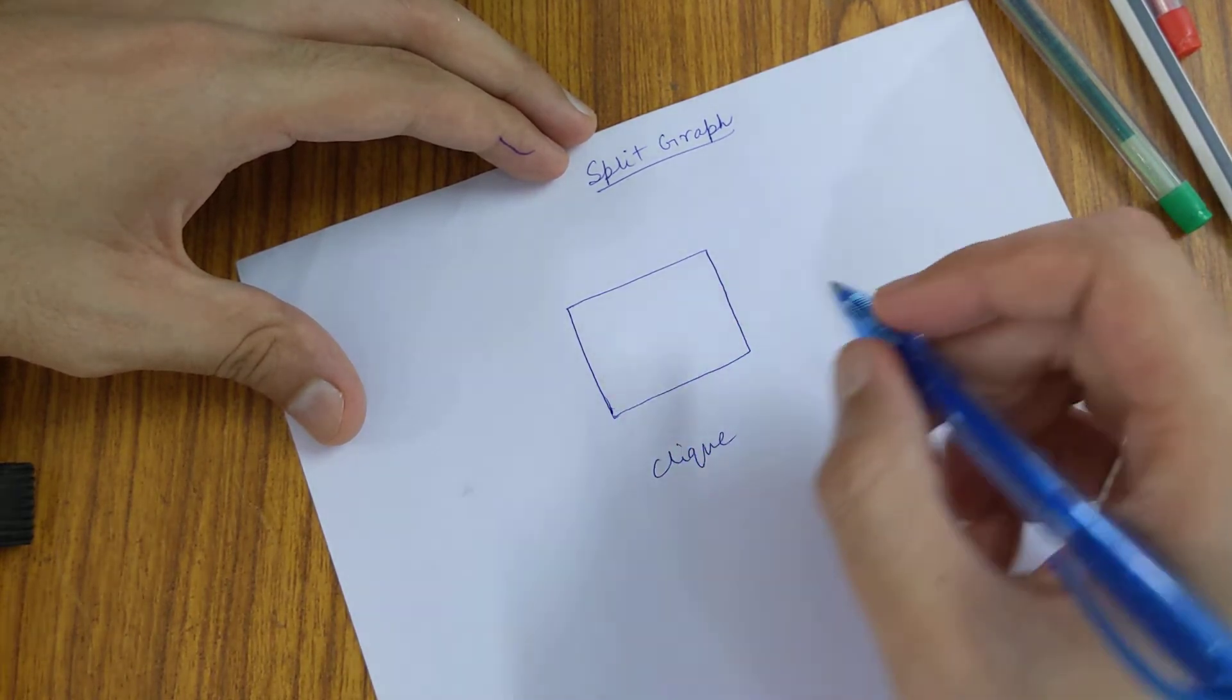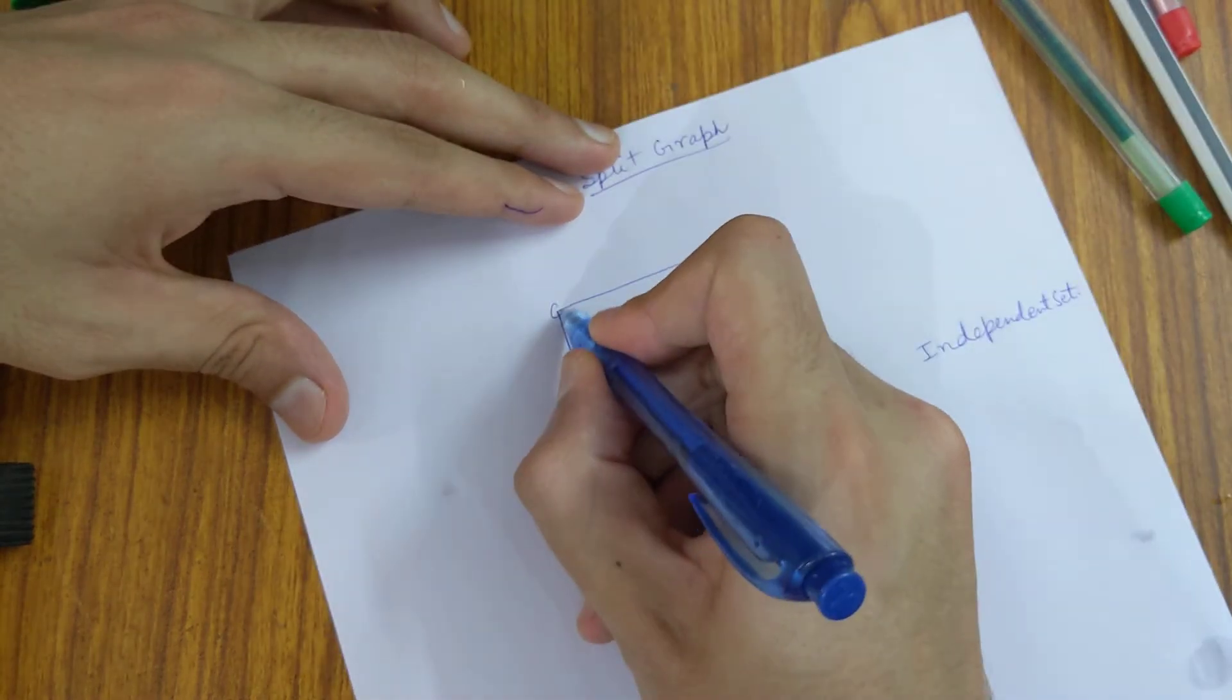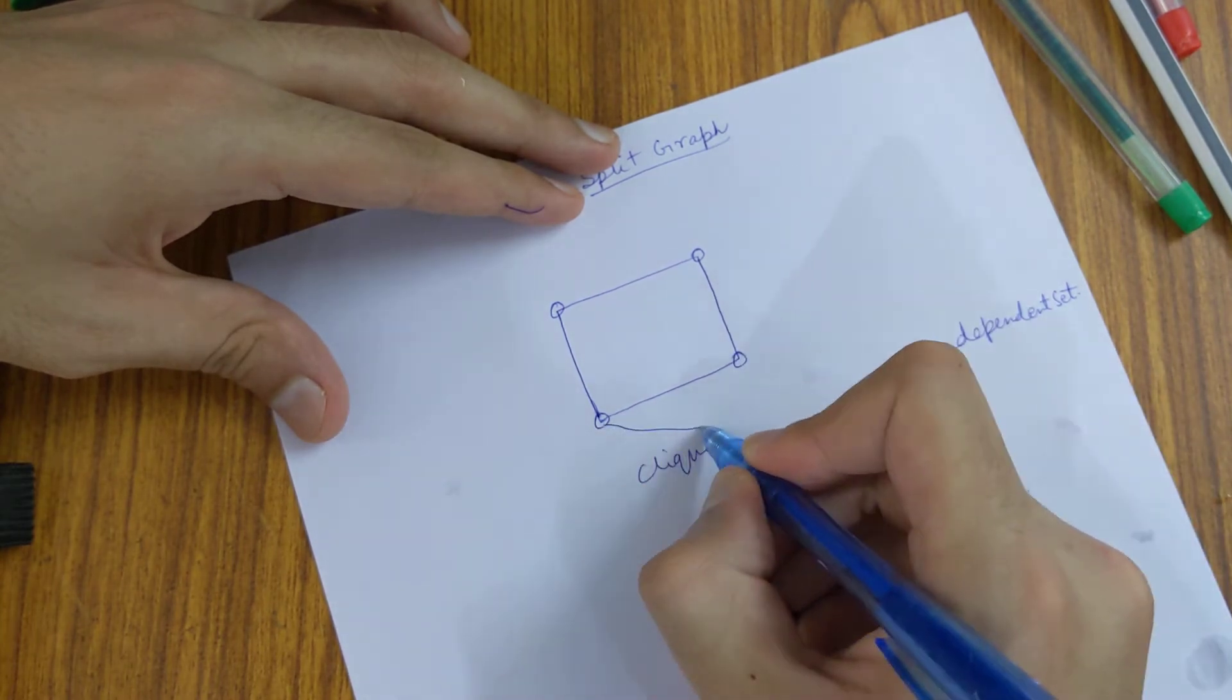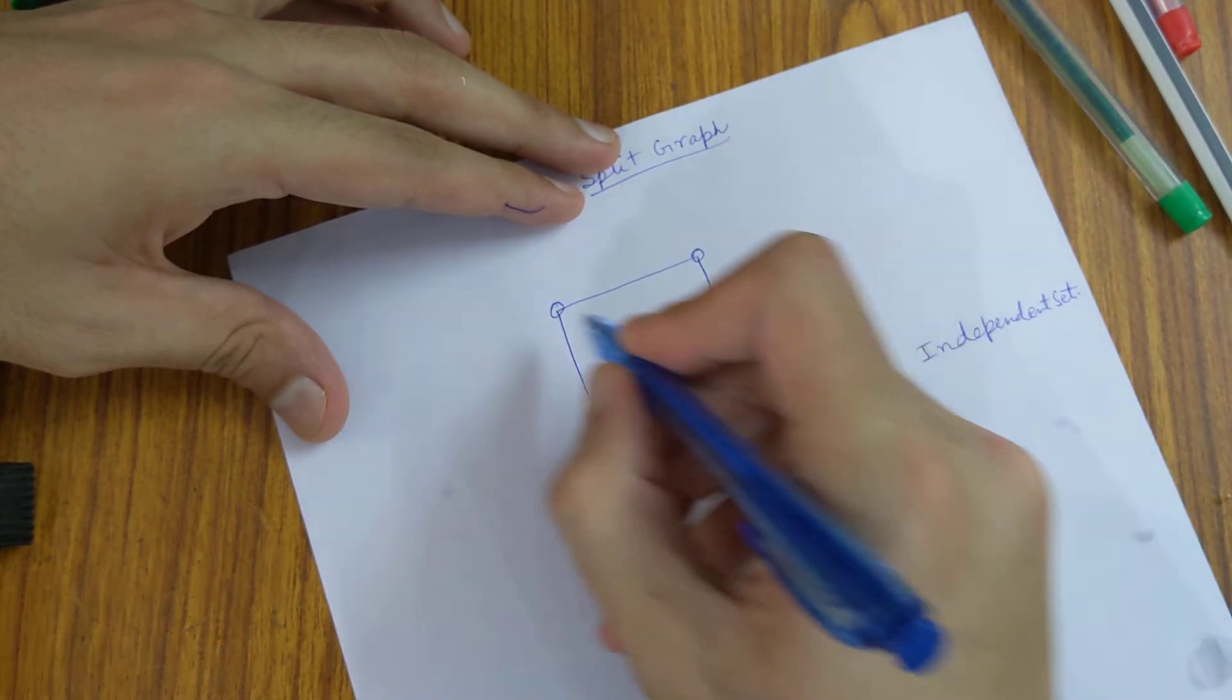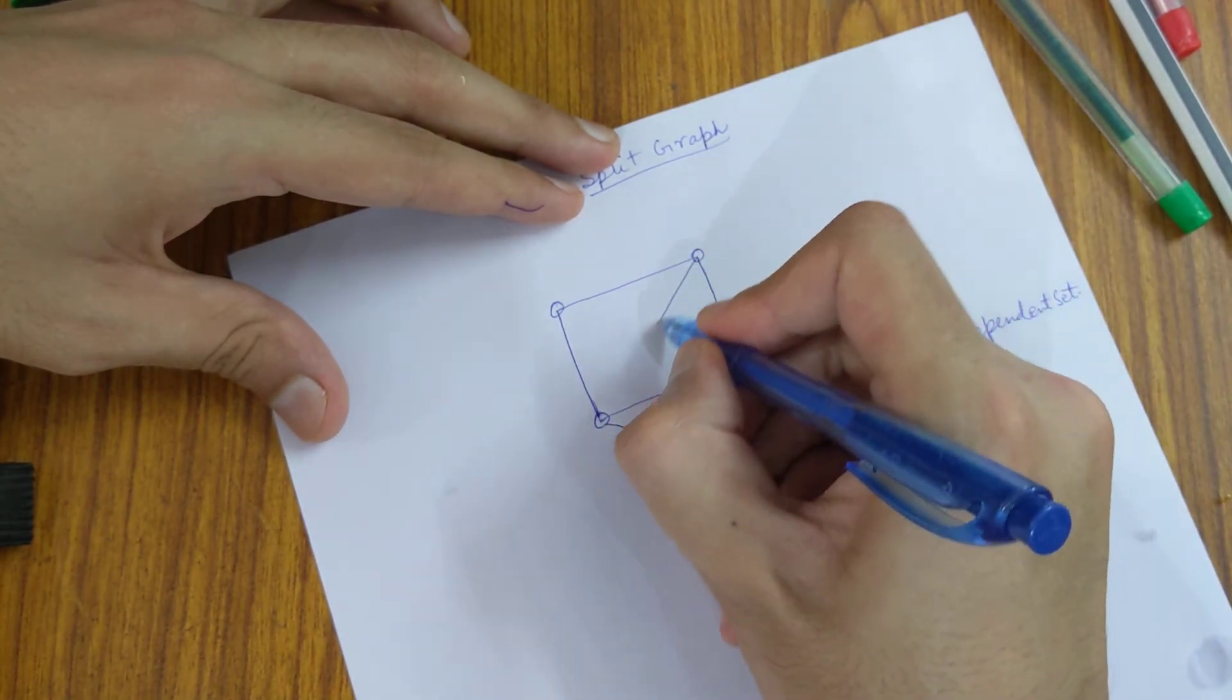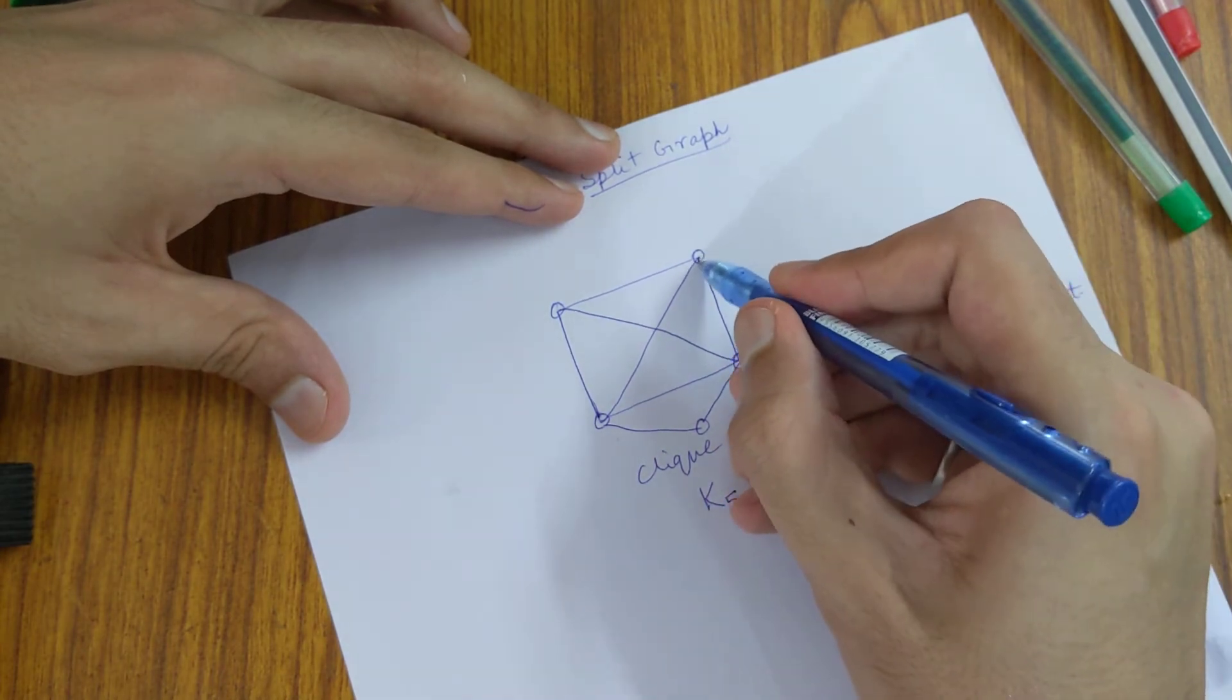I'll just reiterate here what they mean. So let's say this is a K5 clique - these will also be connected, and these will also be connected.